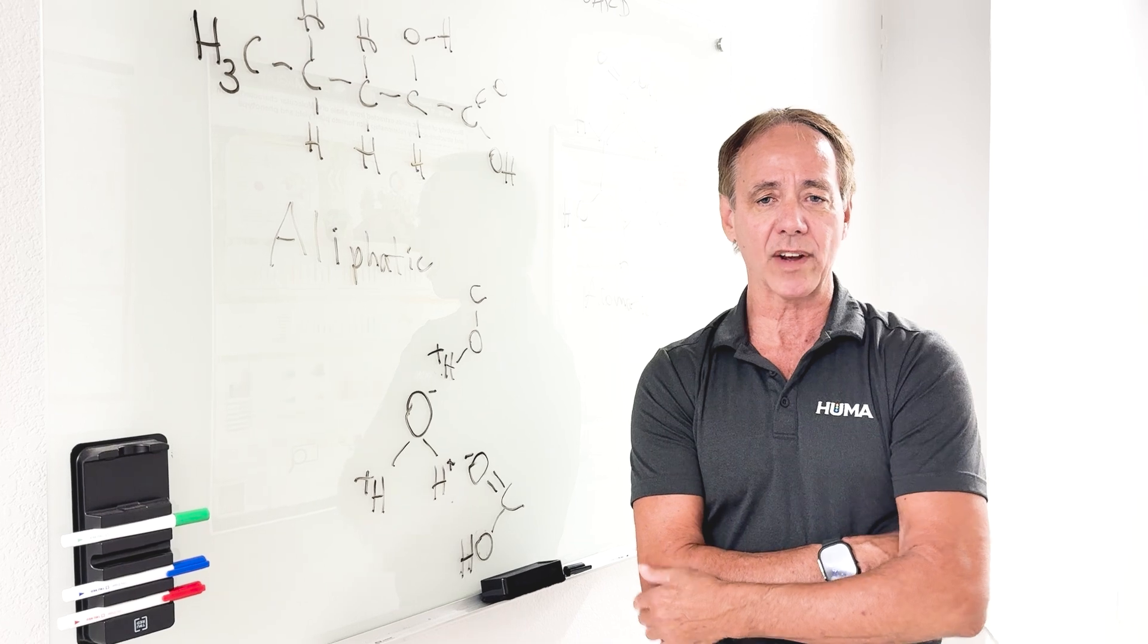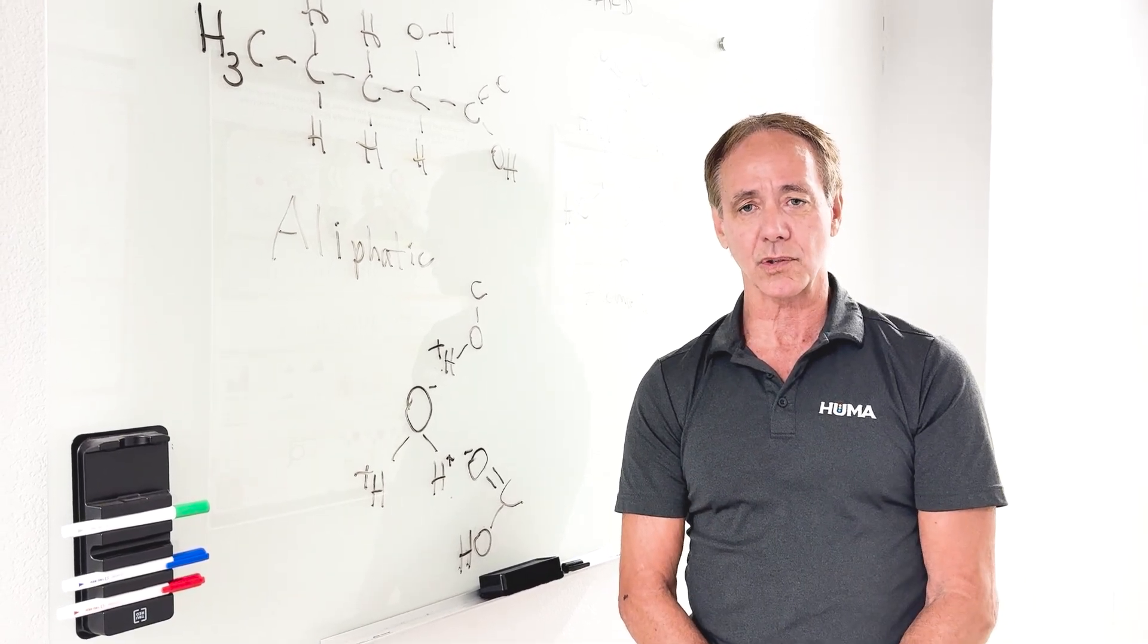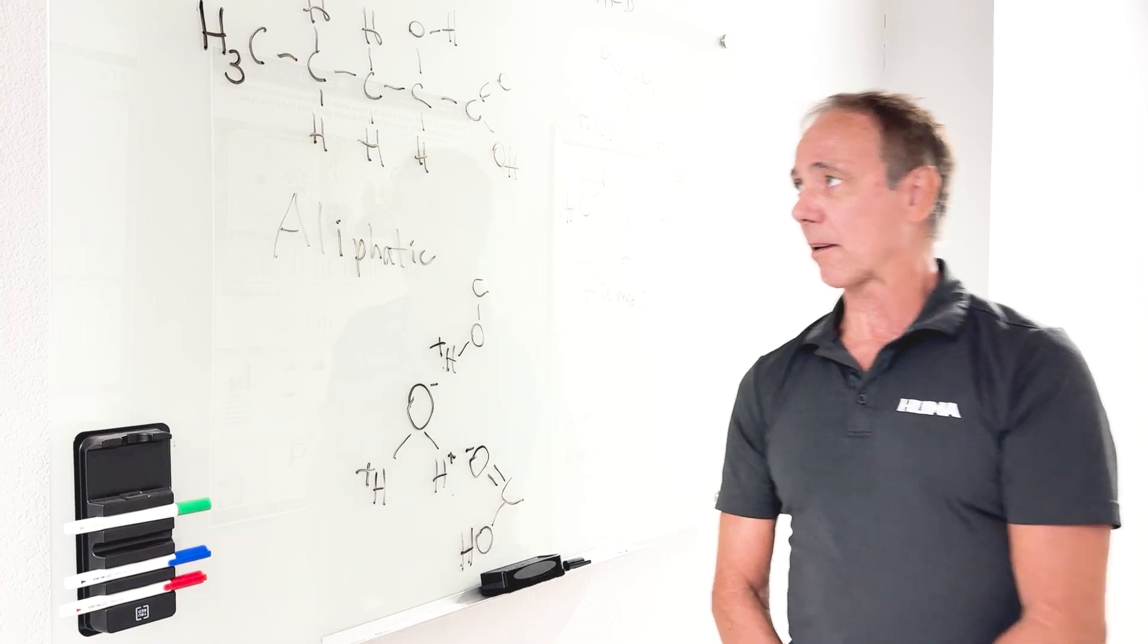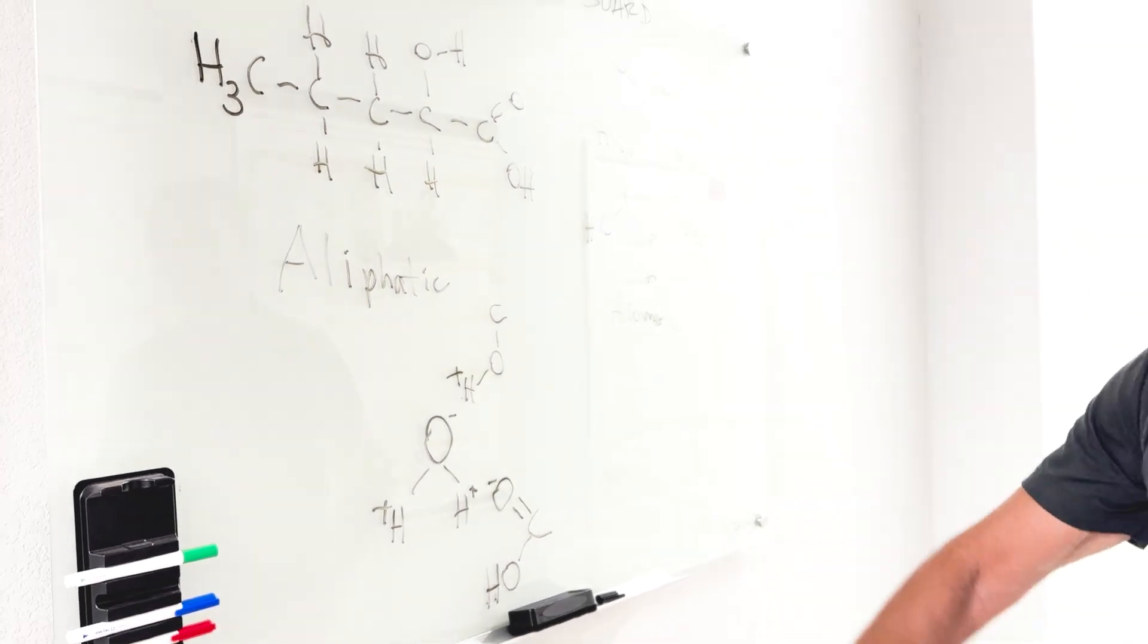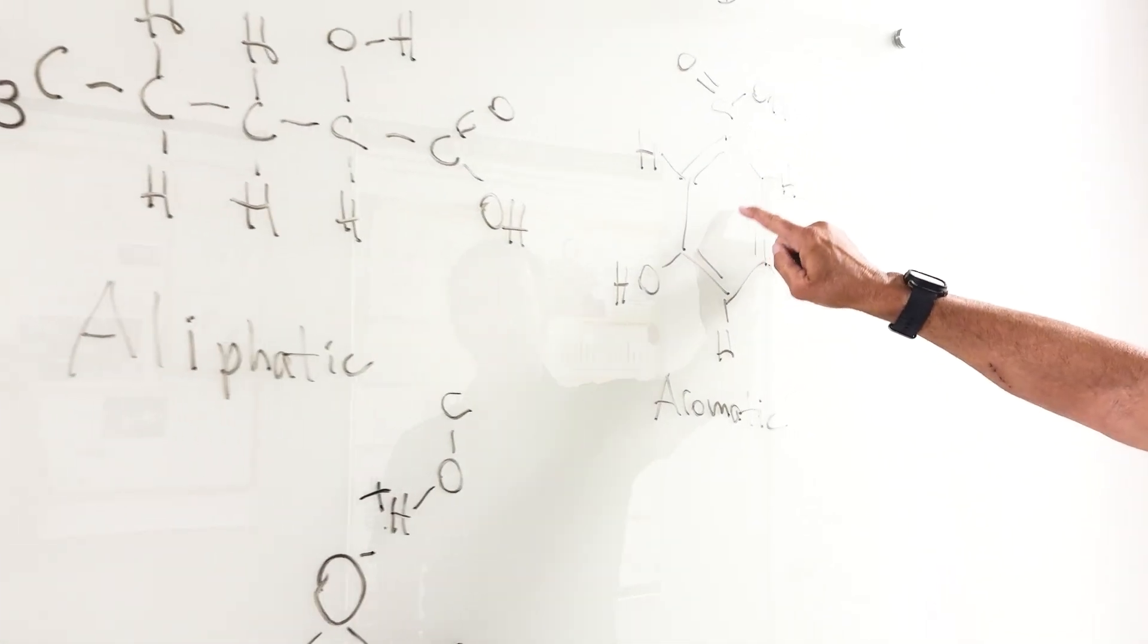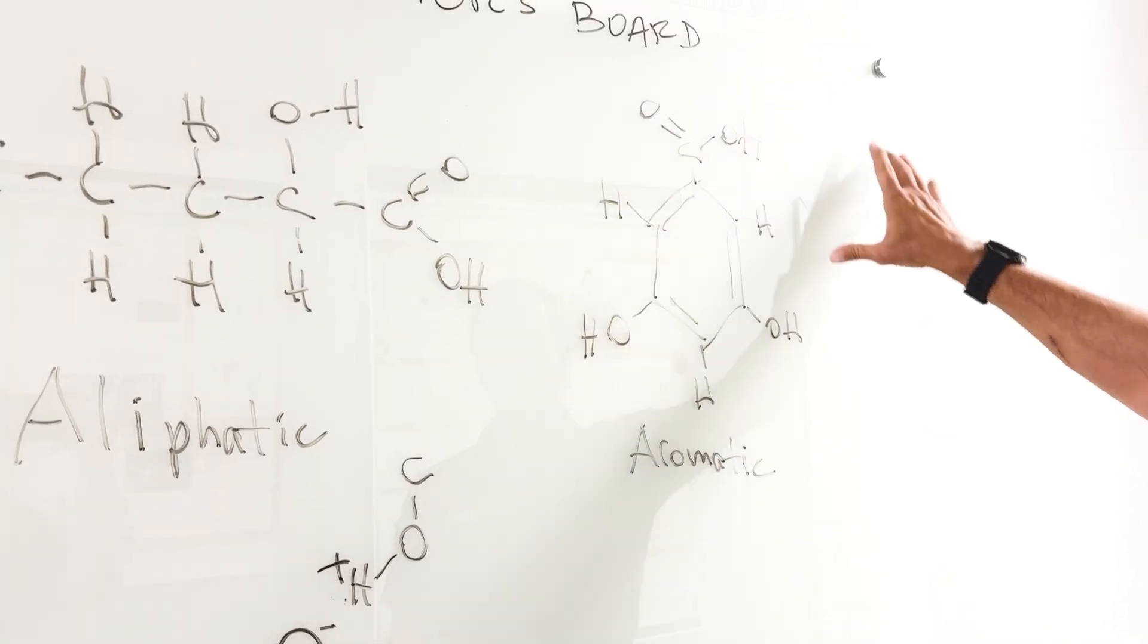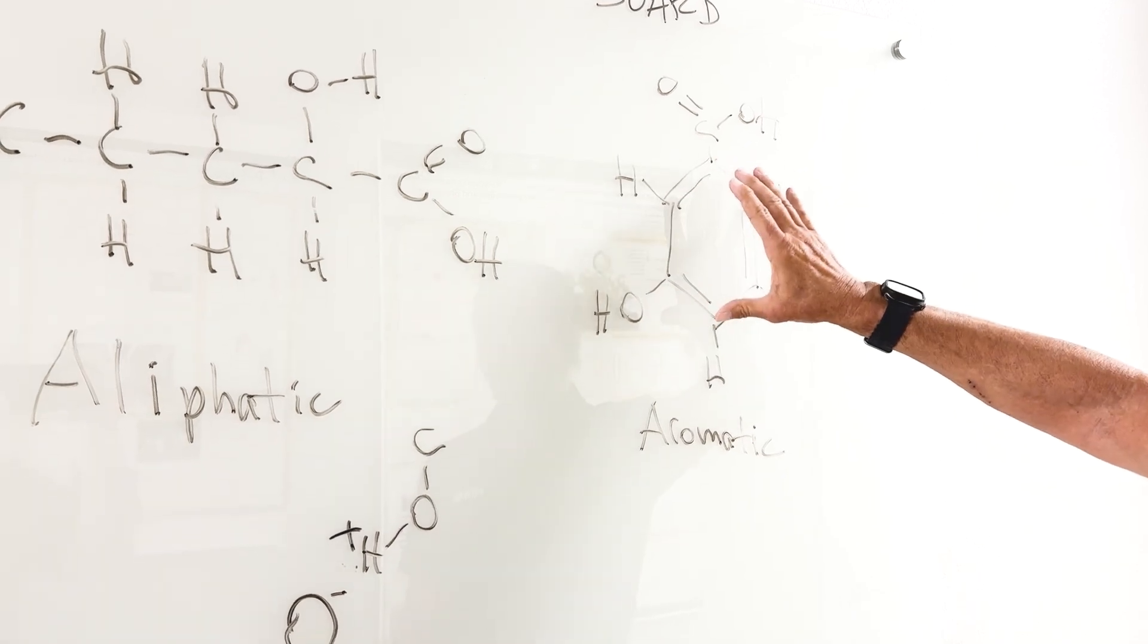In terms of the difference between humic acids and fulvic acids, humic acids and fulvic acids are composed of thousands of different molecules, and they are composed of aliphatic molecules, which are long carbon chains, and also aromatic molecules that are, for example, a benzene ring, and then you can have a couple of benzene rings attached to each other.